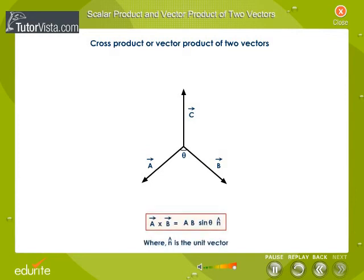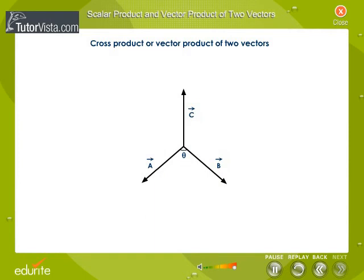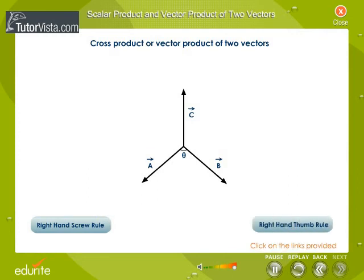The direction of the third vector c need not be in the direction of vectors a and b. The direction of vector c can be determined either by using the right-hand screw rule or the right-hand thumb rule.